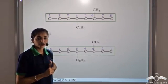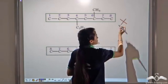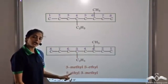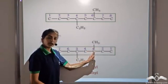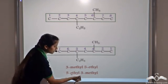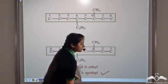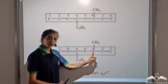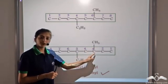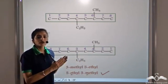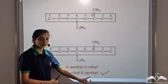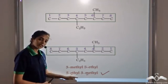According to the rule, the lowest number has to be given to the substituent, so we cannot number from the left. Now should the name be 3-methyl-5-ethyl or 5-ethyl-3-methyl? Even though methyl is getting a lower number, we must arrange substituents alphabetically. Since E comes before M, the correct name is 5-ethyl-3-methyl. Methyl gets the lower number because of the lowest-number rule, but ethyl is placed first alphabetically because E comes before M.